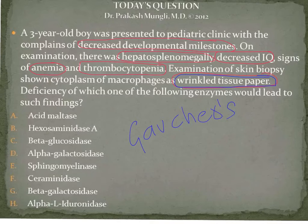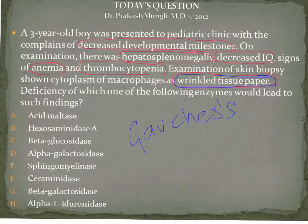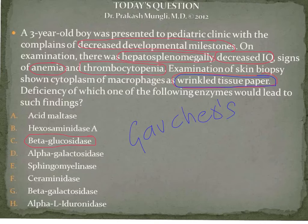Gaucher's disease is a type of sphingolipidosis. In Gaucher's disease you see all the signs mentioned in the case: decreased developmental milestones, hepatosplenomegaly, decreased IQ, anemia, thrombocytopenia, and wrinkled tissue paper appearance of the cytoplasm of Gaucher's cells. The enzyme deficient in Gaucher's disease is beta-glucosidase — that is option C.